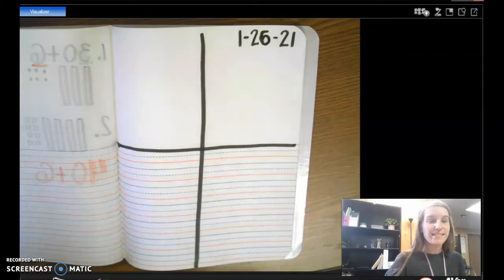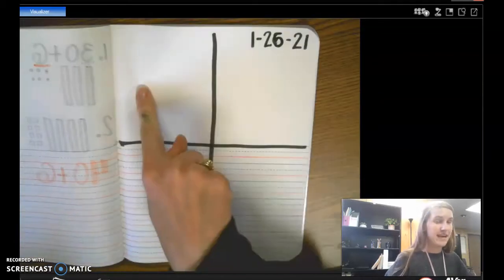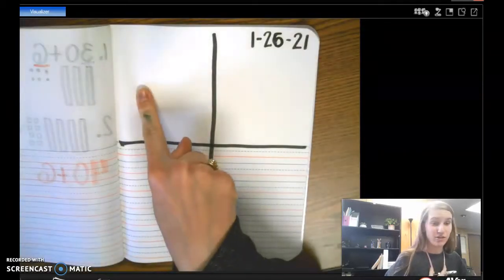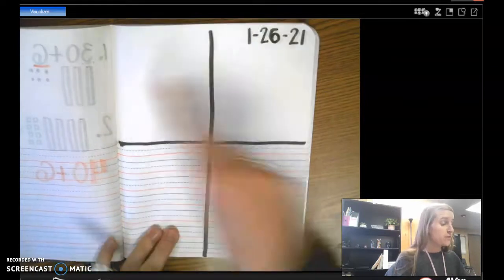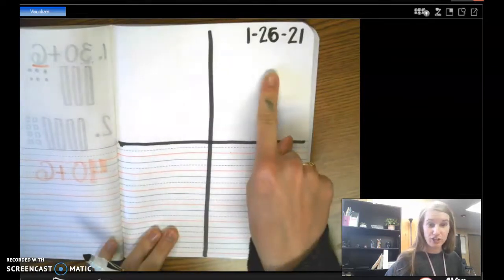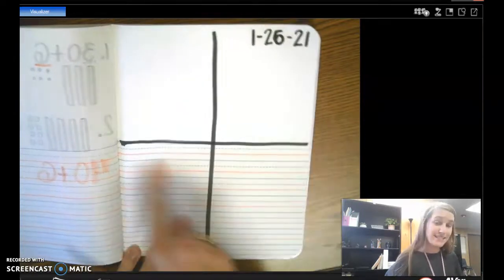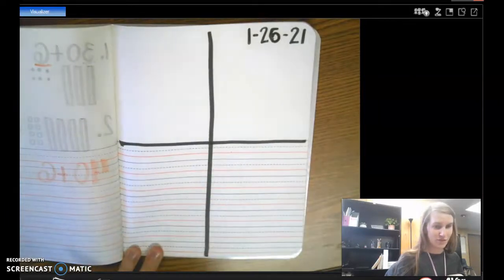Alright, so I'm going to say a number. We are going to write the standard form of the number. Then we are going to draw the picture form. We're going to expand it, and we're going to write the word form.